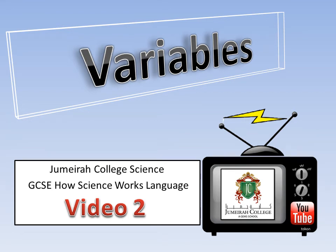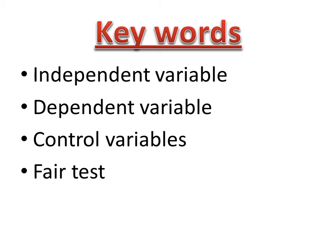We're going to look at variables. A variable is anything that can be changed in a scientific experiment that will affect what happens — will affect the outcome. We need to know about the three different types of variables: the independent, the dependent, and the control variables, and also what makes a fair test.